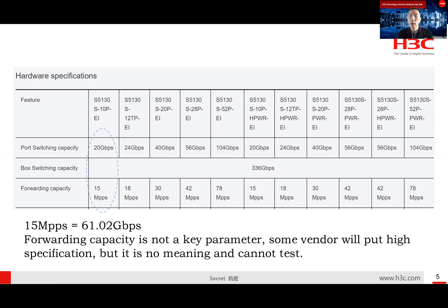Looking at our company's product - a similar switch with the same 10 ports - the switching capacity is the same, but our product is more practical. We claim only 15 million packets per second, which is around 61 gigabit per second. Our switch also has what we call box switching capacity, which is the backplane - and that can support much higher capacity. Of course, it will still be limited by the port switching capacity.